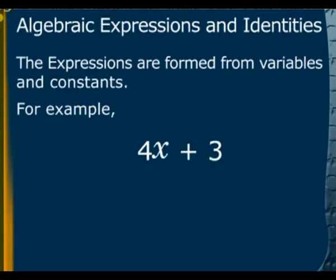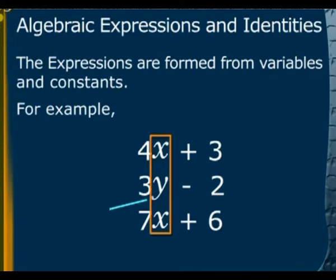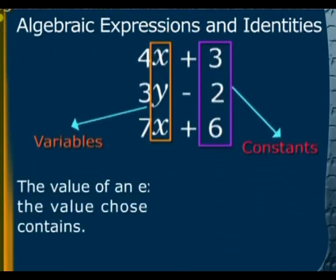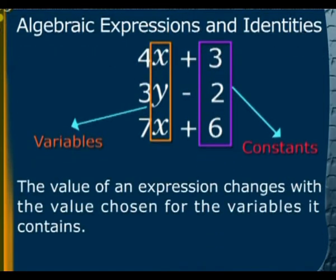4x plus 3, 3y minus 2, 7x plus 6, etc. are called algebraic expressions. Here, x and y is called variable and 3, 2, 6 are called constants. The value of an expression changes with the value chosen for the variables it contains.